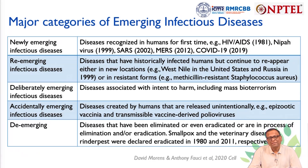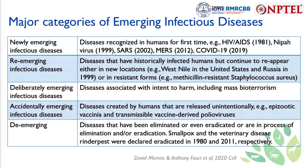There can also be accidental emerging of infectious diseases — diseases created by humans and released unintentionally, for example epizootic vaccinia and transmissible vaccine-derived polioviruses. De-emerging diseases are those that have been eliminated or eradicated, or are in the process of elimination or eradication; smallpox was eradicated in 1980 and Rinderpest veterinary disease in 2011.